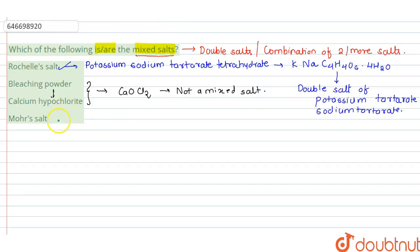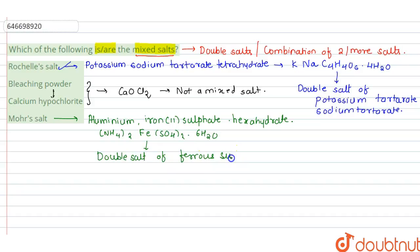And the fourth one is Mohr's salt. So Mohr's salt is ammonium Fe2 sulfate. The formula for Mohr's salt is (NH4)2Fe(SO4)2·6H2O. Now this Mohr's salt is also a double salt of ferrous sulfate and ammonium sulfate. Therefore, Mohr's salt is also a mixed salt. So the correct options are two, one, and four. Thank you.